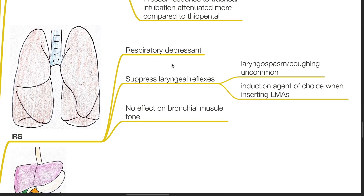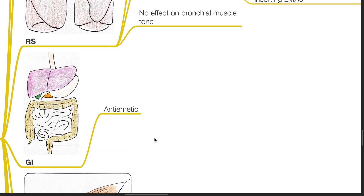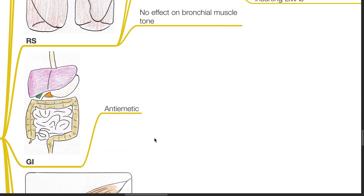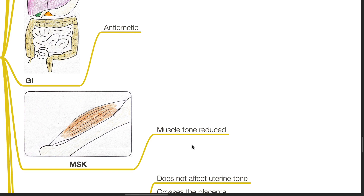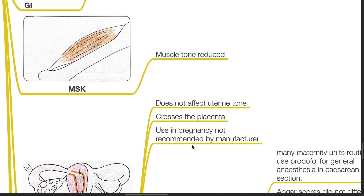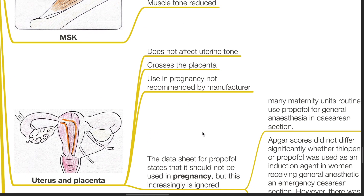Propofol is a respiratory depressant and suppresses laryngeal reflexes. Laryngospasm and coughing are uncommon, making it the induction agent of choice when inserting LMAs. There is no effect on bronchial muscle tone. Propofol is an antiemetic, and muscle tone is reduced when propofol is used.